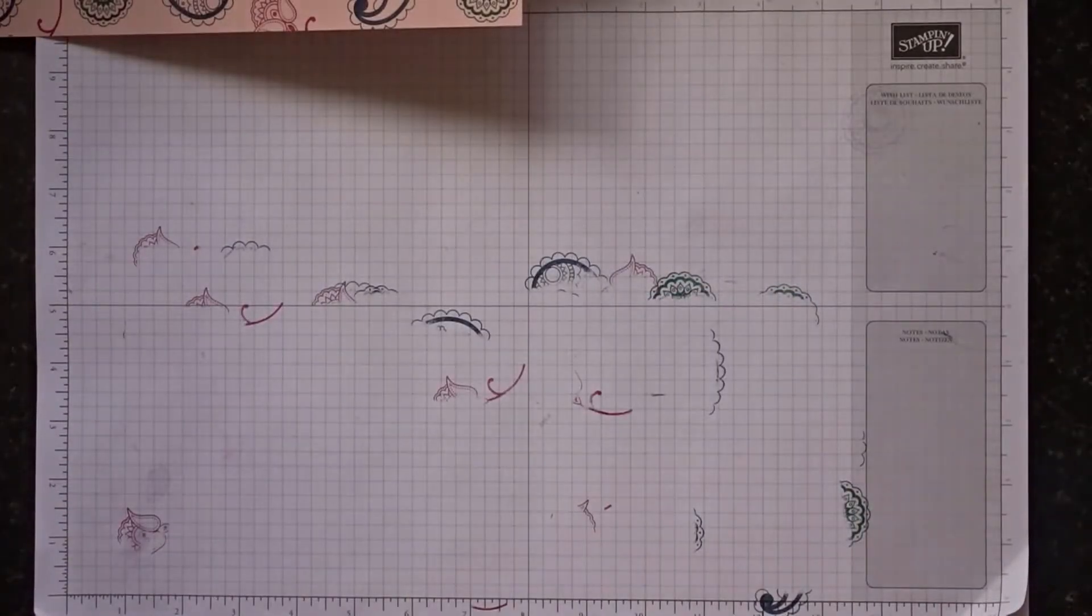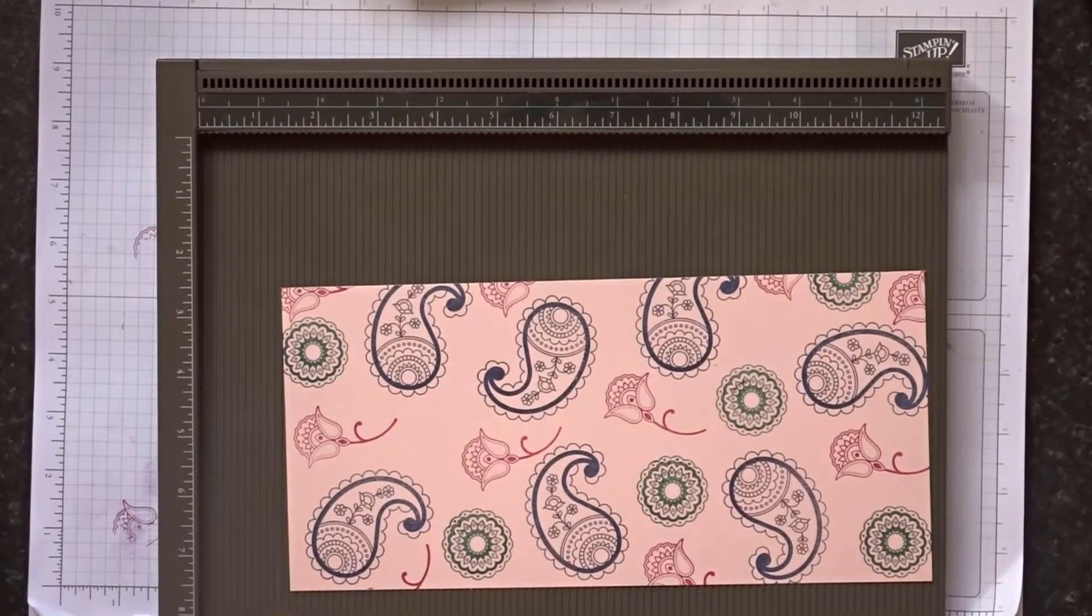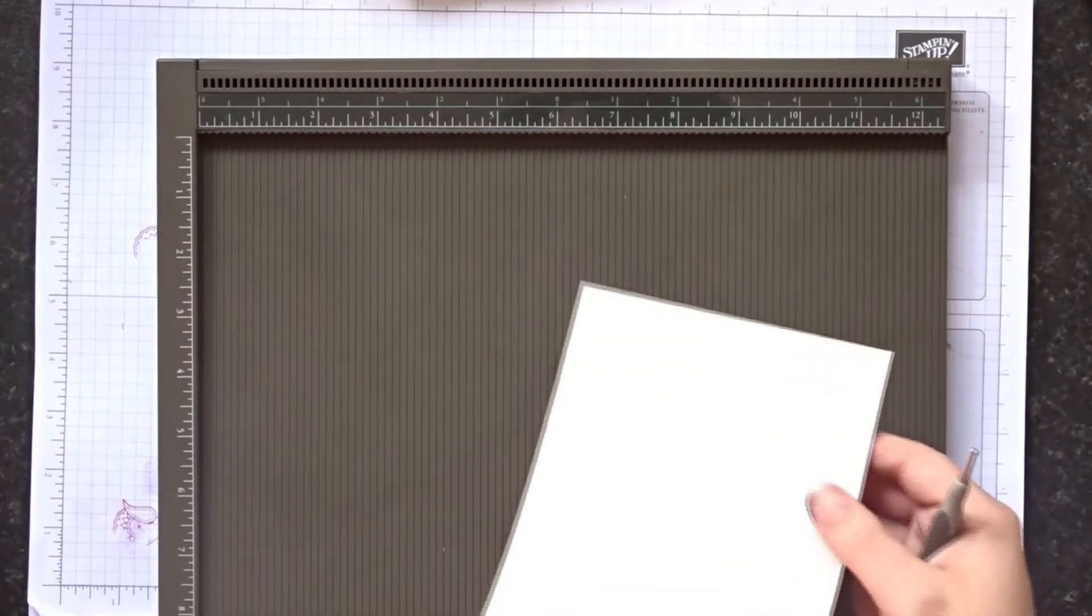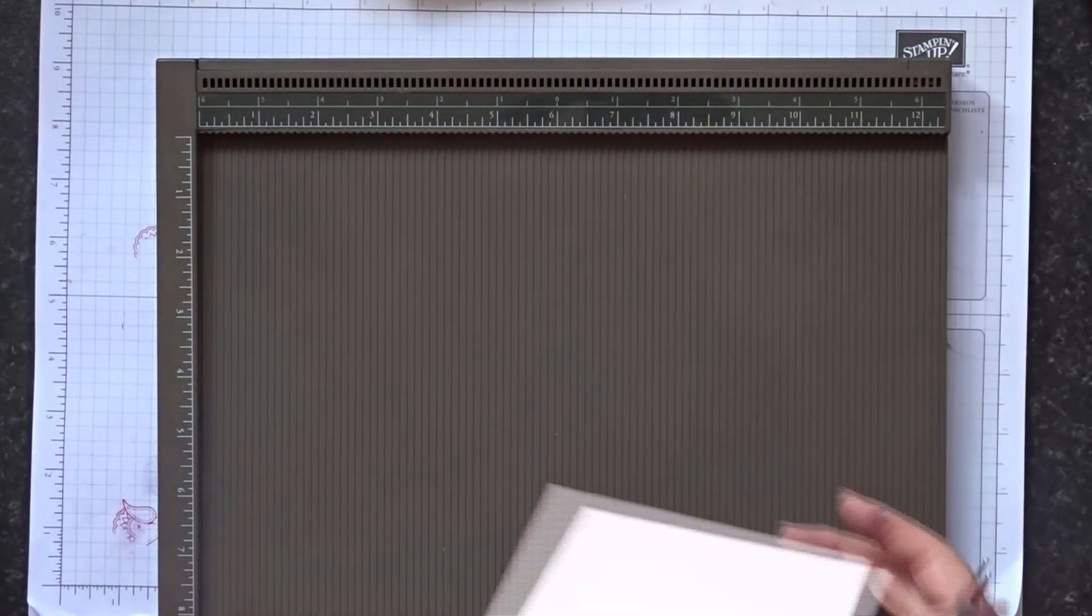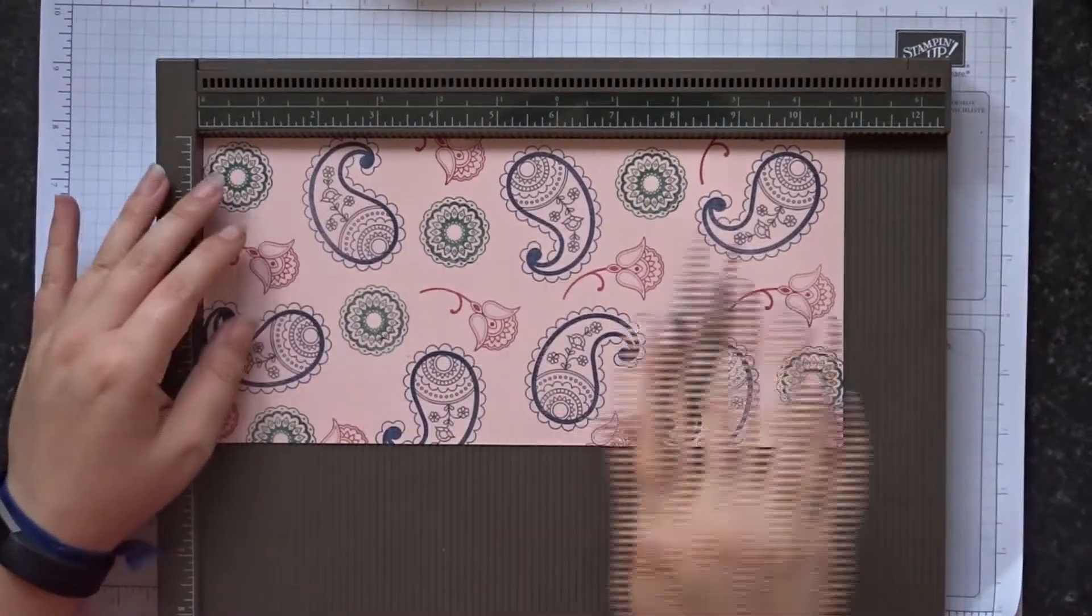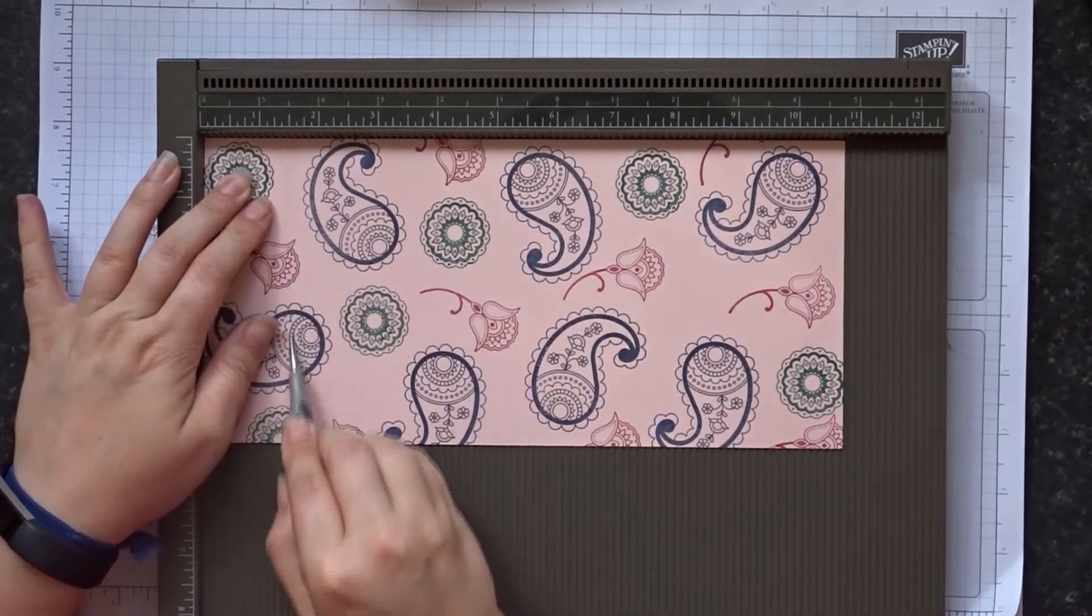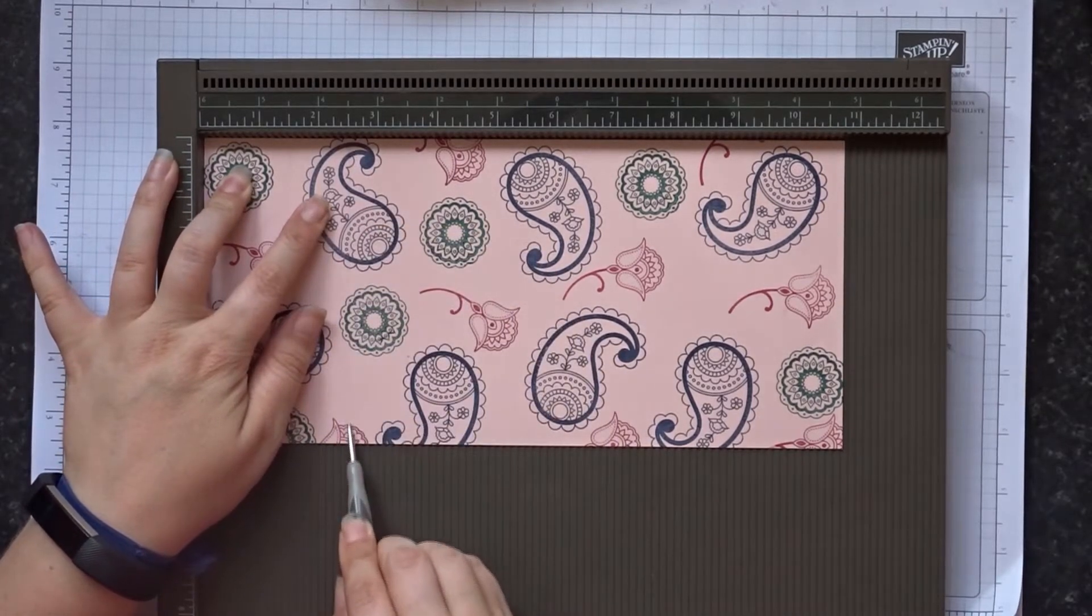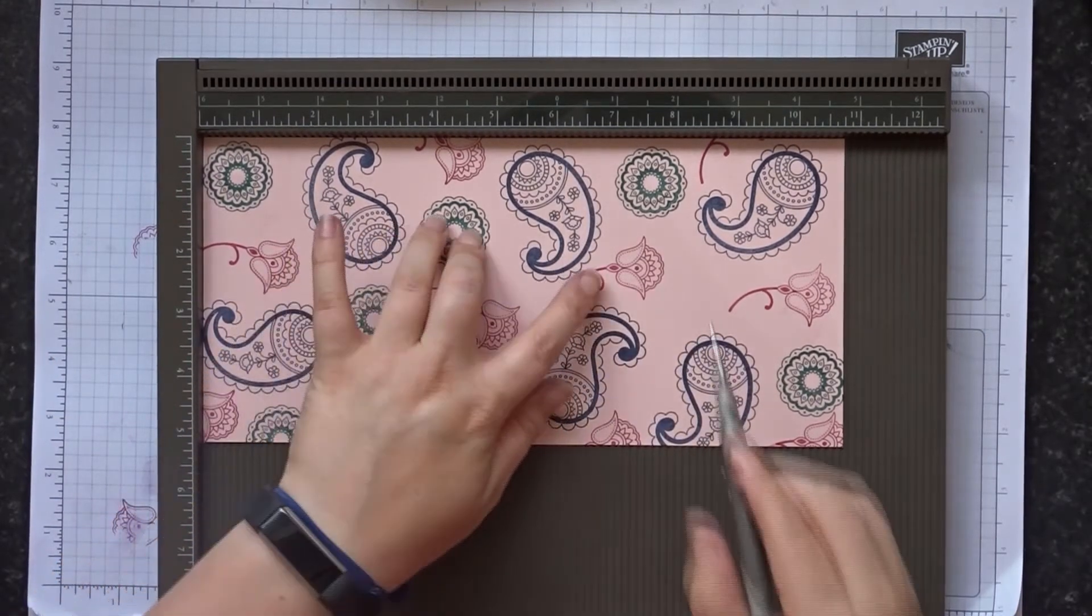So next you're going to need your scoreboard and you need to work out which way up you want your pattern to be. So I want my flowers to be the right way up. So if you think about how you fold your box up it's over the top like that. So on the long side you need to score at one and a half inches, two and a half inches, six and one eighth of an inch and seven and one eighth of an inch.